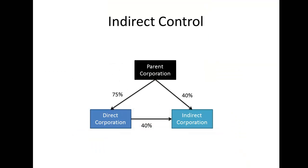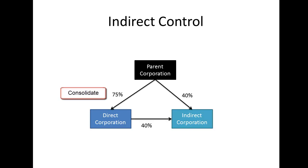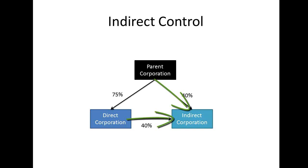Here's what I mean by indirect control. Parent owns 75% of direct corporation and 40% of indirect corporation. Had that been the end of it, parent would consolidate direct and use the equity method to account for indirect. But here's the rub: direct corporation acquired a 40% block of indirect corporation shares this year. By virtue of parent corporation having the ability to vote both blocks of shares — the 40% it owns in indirect, as well as the other 40% that it controls through direct corporation — parent now controls indirect corporation.